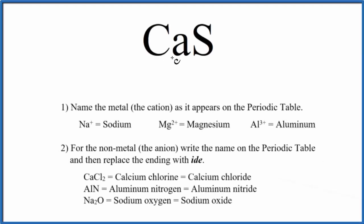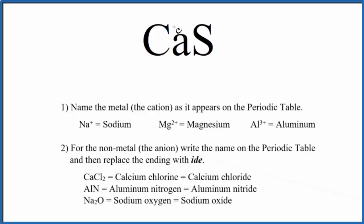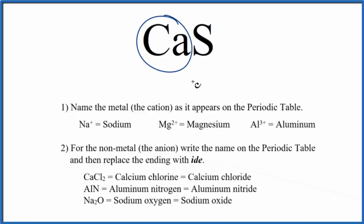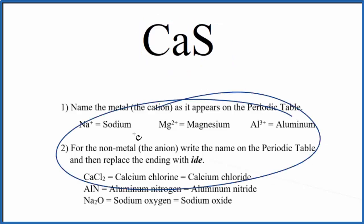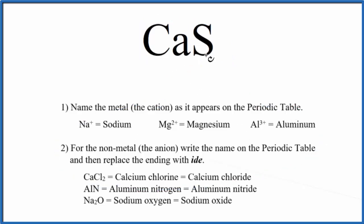To write the name for CaS, we first need to recognize what type of compound we have. Since calcium is a metal and sulfur is a nonmetal — a metal and a nonmetal — that's an ionic compound. We have to think about the charge on the atoms here. Specifically, this is called a binary ionic compound; there are just two different types of elements. Because of that, we'll use these rules to write the name for CaS.